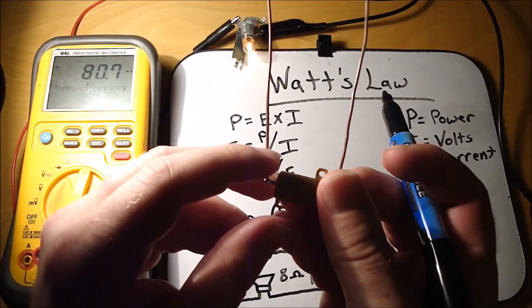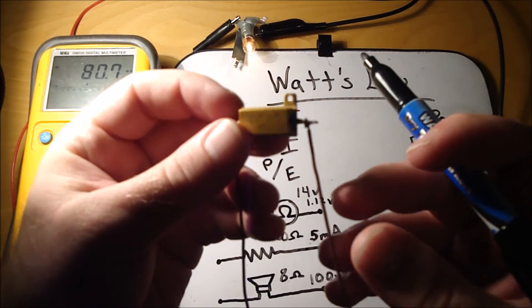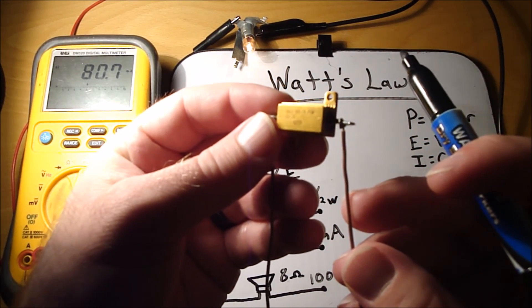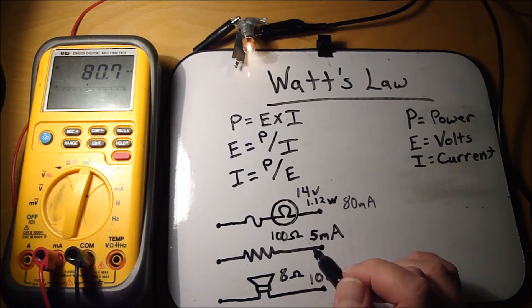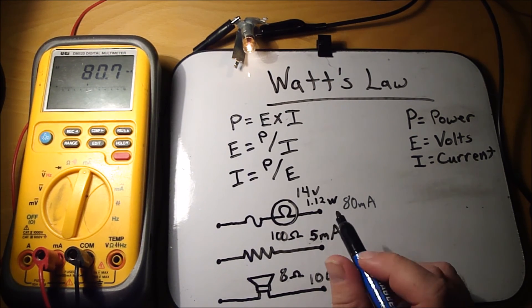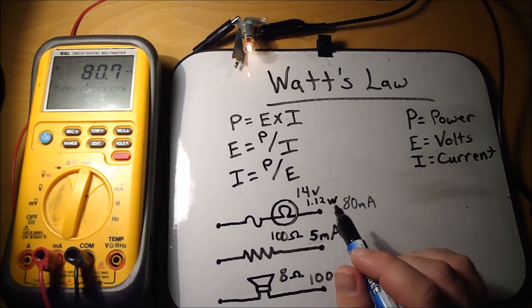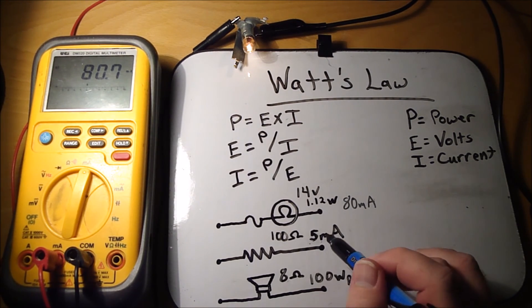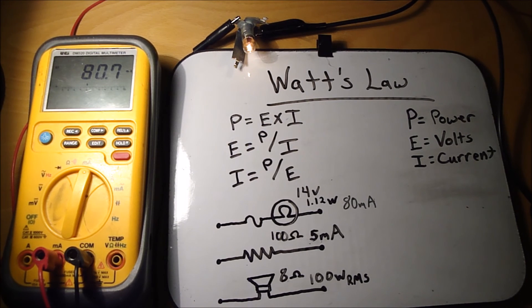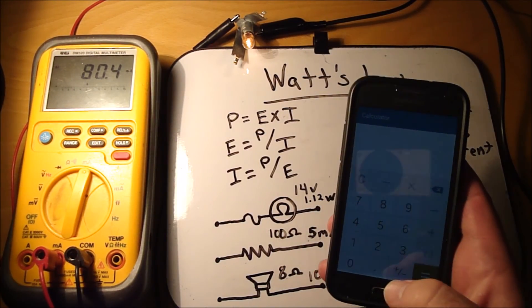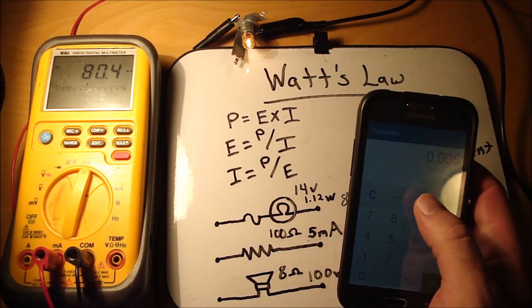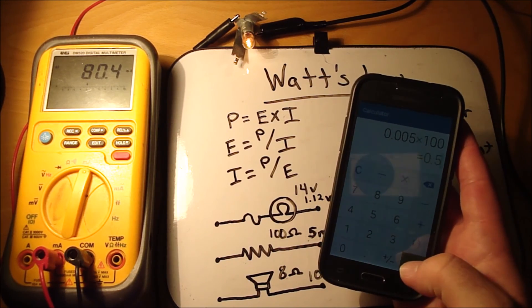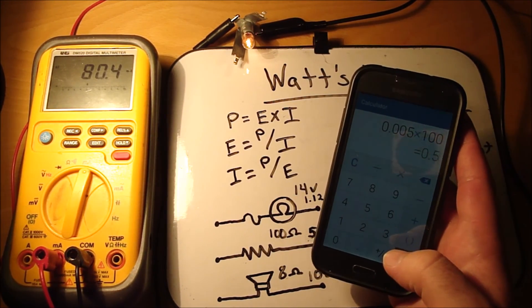Some resistors tell you right on them what they are. So this is an 8 ohm, 10 watt resistor. And so you need to know what watt resistor you need to put in there. And you can use Ohm's law to figure the voltage drop across this, taking your 5 milliamps times your 100 ohms. Alright, so let's calculate volts. So that would be 5 milliamps, which is .005 amps, times 100 ohms, equals, so that resistor is going to have .5 volts dropping across it.